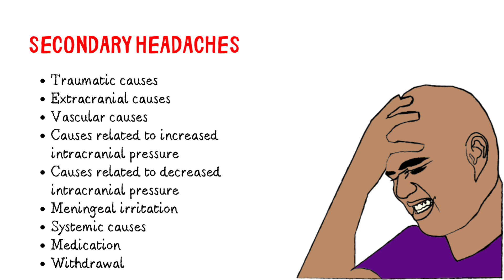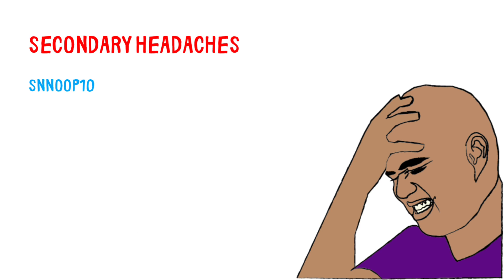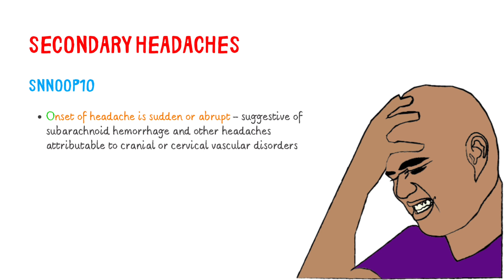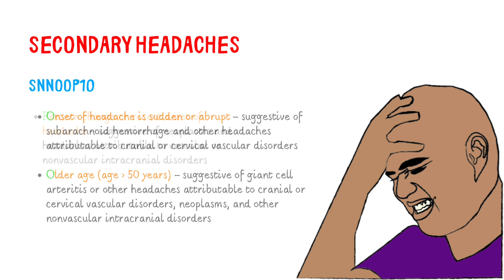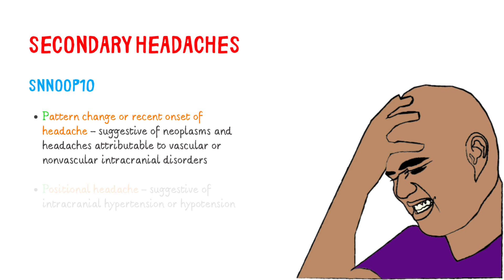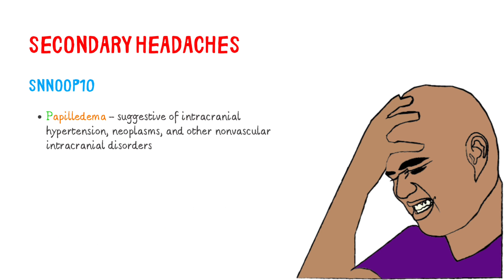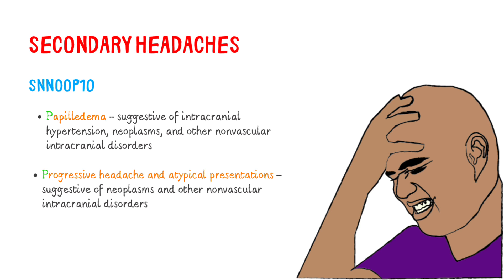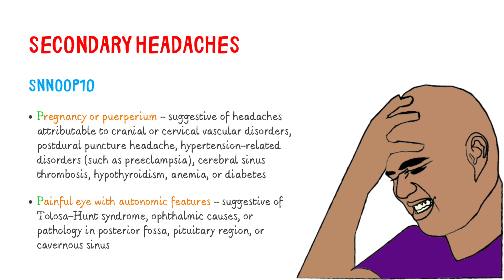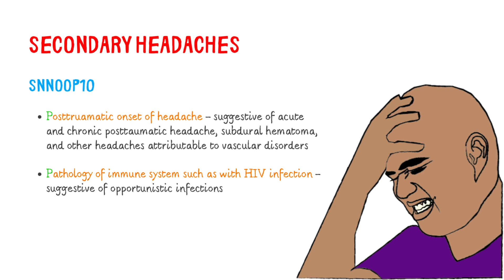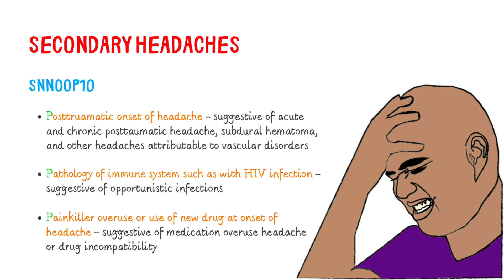A headache caused by an underlying condition is termed a secondary headache. The SNOOP10 criteria may be helpful in identifying red flags suggestive of a secondary cause. These include: systemic symptoms including fever; neoplasm in history; neurologic deficit; sudden or abrupt onset of headache; older age; pattern change or recent onset; positional headache; precipitated by sneezing, coughing, or exercise; papilledema; progressive headache and atypical presentations; pregnancy or puerperium; painful eye with autonomic features; post-traumatic onset; pathology of the immune system such as HIV infection; and painkiller overuse or use of a new drug at onset of headache.